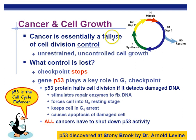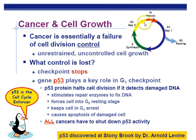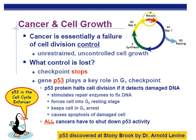Cancer is essentially a failure of cell division control. We have checkpoints: the G1 checkpoint, where P53 plays a role; the G2 checkpoint, making sure we have organelles and everything ready for mitosis; and the M checkpoint, which ensures anaphase is ready to go — this happens during anaphase.